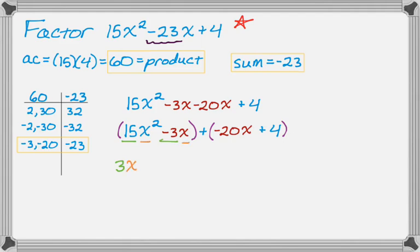Look at what you're left with. So 15 over 3 is 5, and x squared over x is x, so 5x. And then negative 3x divided by 3x is just minus 1. So plus negative 20 and 4 is what we're looking at.